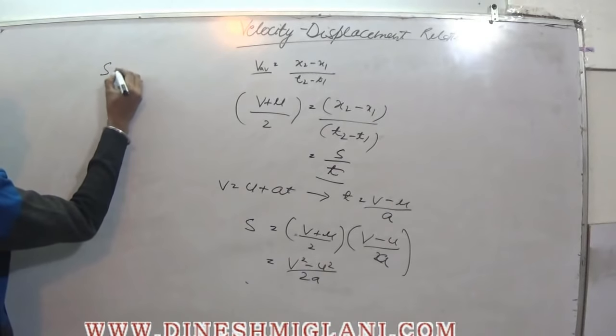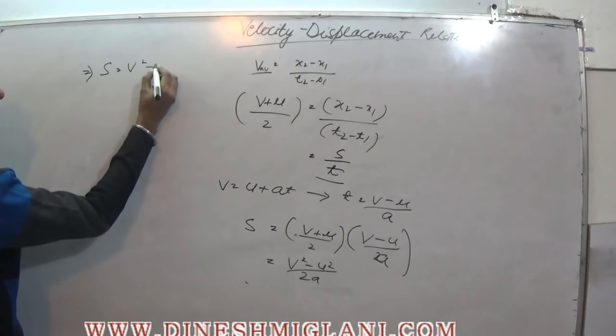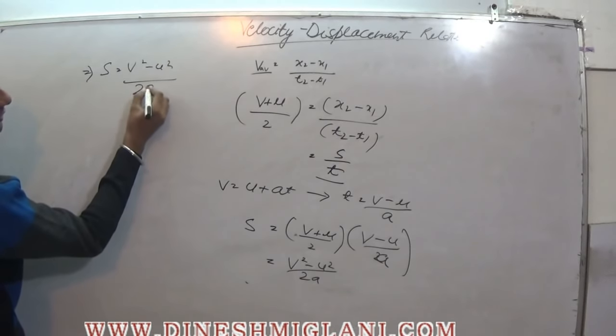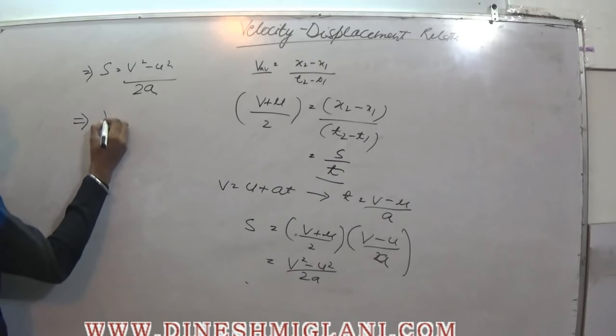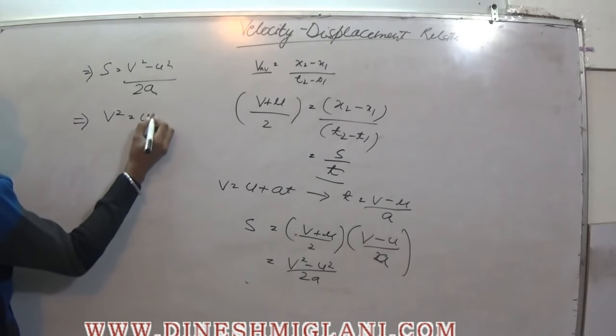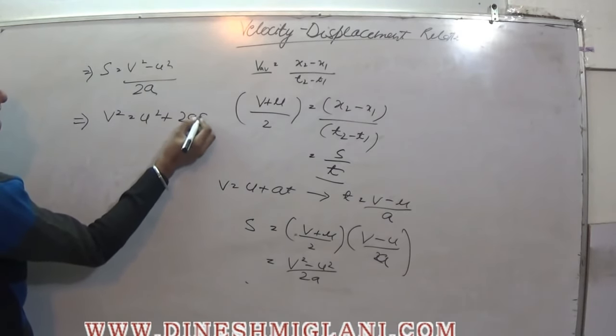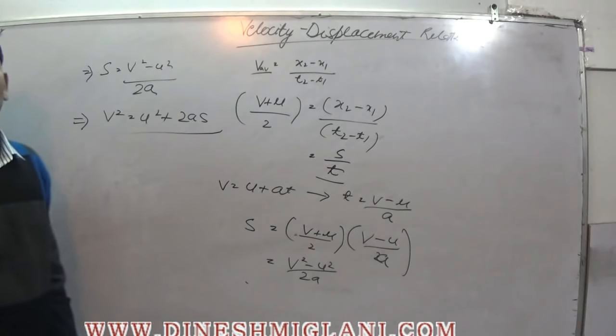So s is equal to v square minus u square upon 2a, implies v square is equal to u square plus 2as. This is the third equation of motion.